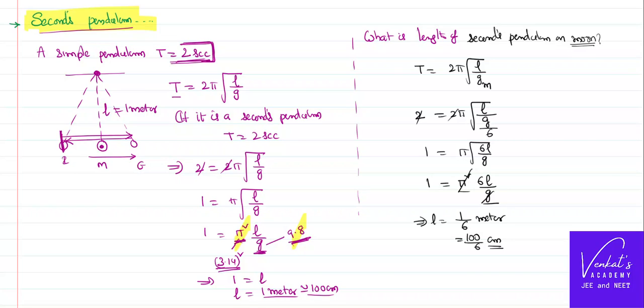Length is 1 meter on earth for a seconds pendulum. If you are talking on moon, its value will be 1 by 6th of a meter.